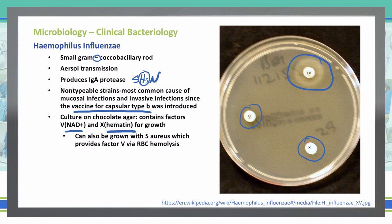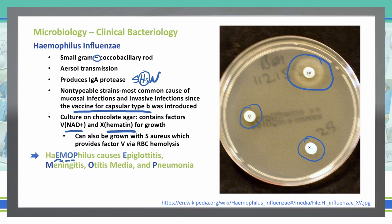To remember what Haemophilus influenzae causes, use the mnemonic EMOP from the letters in 'Haemophilus': E for epiglottitis, M for meningitis, O for otitis media, and P for pneumonia. So the spelling of Haemophilus itself tells us what it causes — epiglottitis, meningitis, otitis media, and pneumonia.